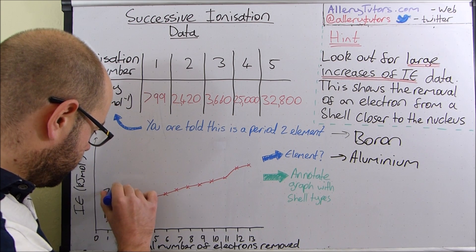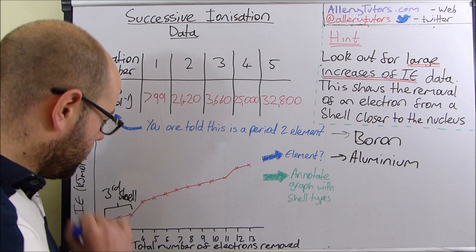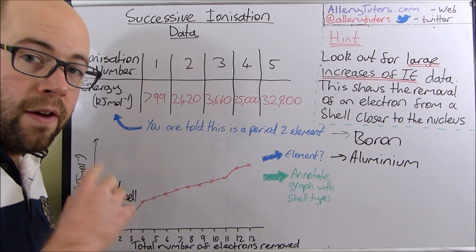So this is the third shell. If I can write properly, there you go. That's your third shell, so remove the first electron, the second, the third. Fine.